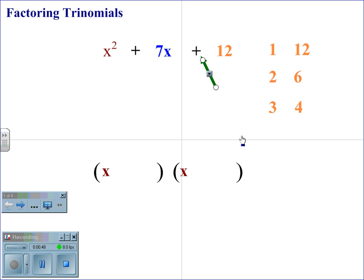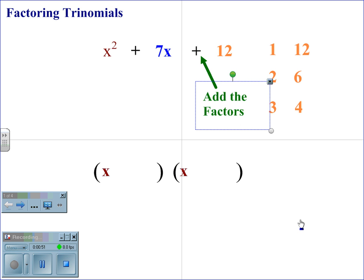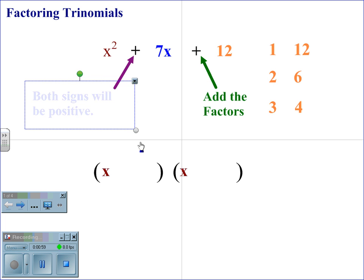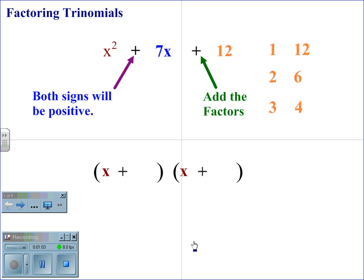Because the second sign is positive, that tells us we are adding the factors. When you add factors, the signs will be the same. The first sign being positive tells us that both signs must be positive. Therefore, we place a positive in each parenthesis set.